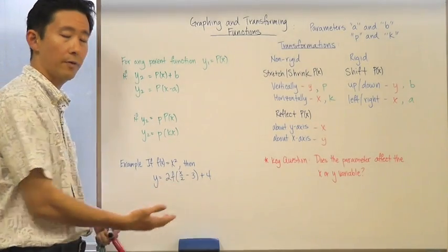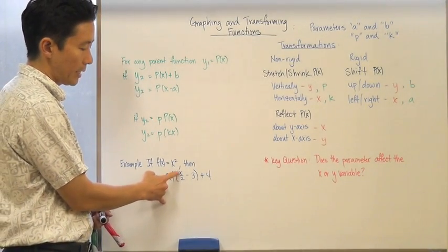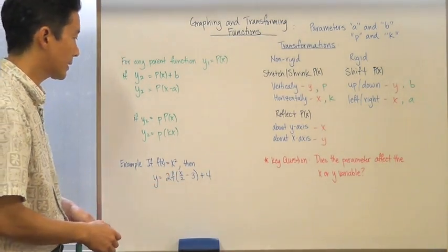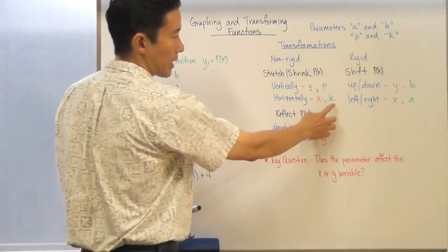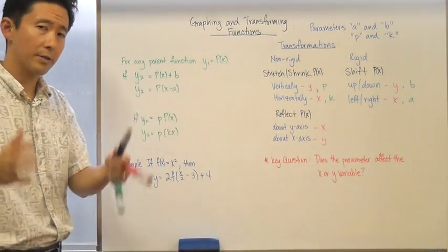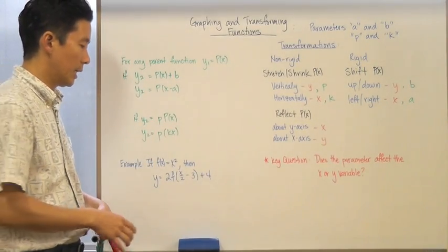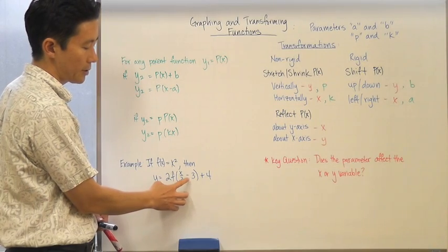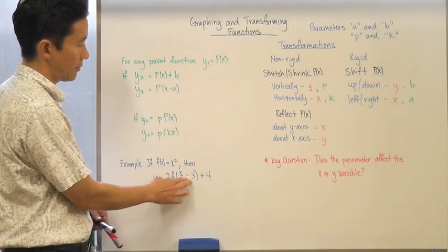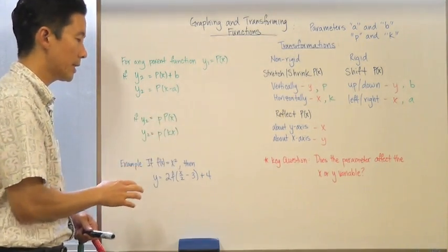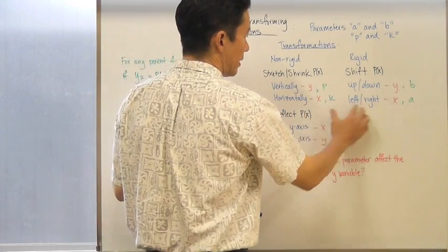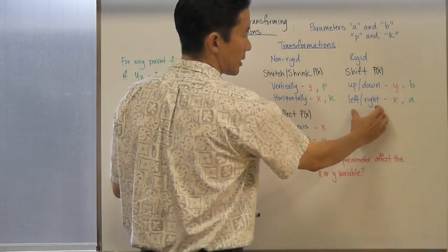We have to follow the order of operations. The first thing we have is x divided by 2, which is the same as the scalar factor of 1/2 multiplying x. So that scalar factor of 1/2 is shrinking the parent function horizontally — shrinking it by a factor of 2. After that, once we shrink by that factor of 2, we subtract 3, which means we're actually moving the function to the right 3 units. So we're dealing with a horizontal shrink as well as a shift to the right 3 units.